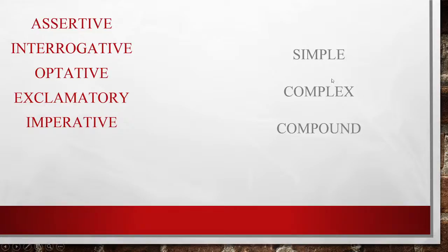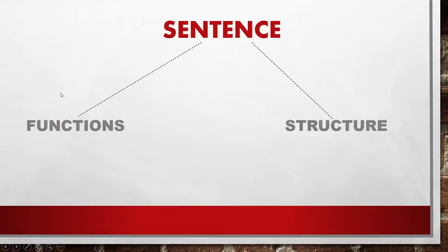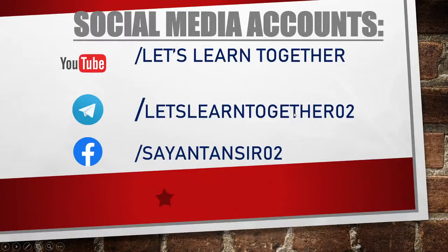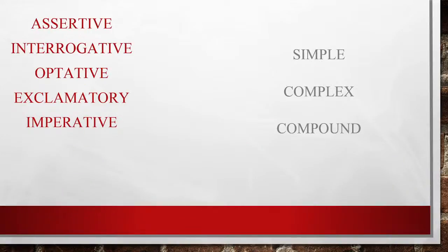Coming back to this: simple, complex, compound. According to the structure, sentences are of three types. According to the function, sentences are of five kinds: assertive, interrogative, optative, exclamatory, and imperative. And according to the structure, sentences are of three types: simple, complex, and compound. That's the summary of today's lesson on types of sentences.